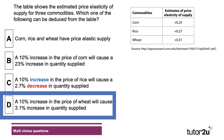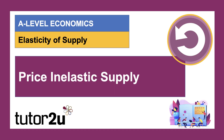A is wrong — all three products: corn, rice, and wheat have a low price elasticity of supply. B is wrong — a 10% increase in the price of corn would lead to a 2.3% increase in quantity supplied, not 23%. Hope you got that question right, and thank you for joining this short video on price inelastic supply.